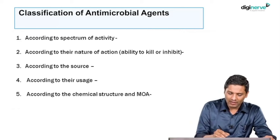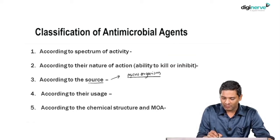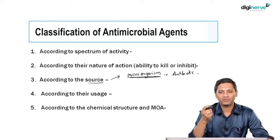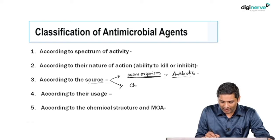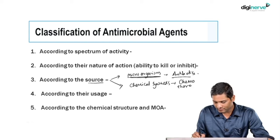Antimicrobial agents can also be classified according to their source — the source from which the antimicrobial agents are derived. Most antimicrobial agents are derived from various microorganisms. If the source is from other microorganisms, those kinds of antimicrobial agents are called antibiotics. If the source is by chemical synthesis, then those antimicrobial agents are called chemotherapeutic agents.